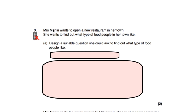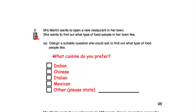Question three says Mrs. Martin wants to open a new restaurant in her town and wants to find out what type of food people like. We need to design a suitable question. I've written: 'What type of cuisine do you prefer?' with options: Indian, Chinese, Italian, Mexican, or other — so if it's not one of the listed options, they can write their own answer in the 'other' box.